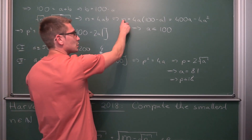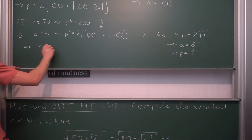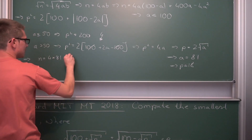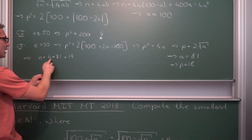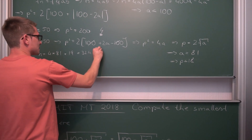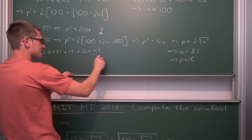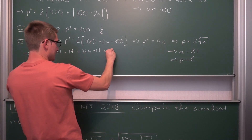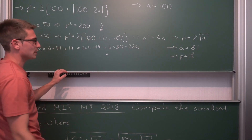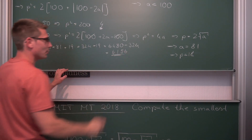What we actually want is the smallest n. Plugging a = 81 into n = 4a(100−a): n = 4 × 81 × (100 − 81) = 4 × 81 × 19 = 324 × 19. Now 324 × 20 = 6480, minus 324 gives us 6156. So the smallest n is 6156.